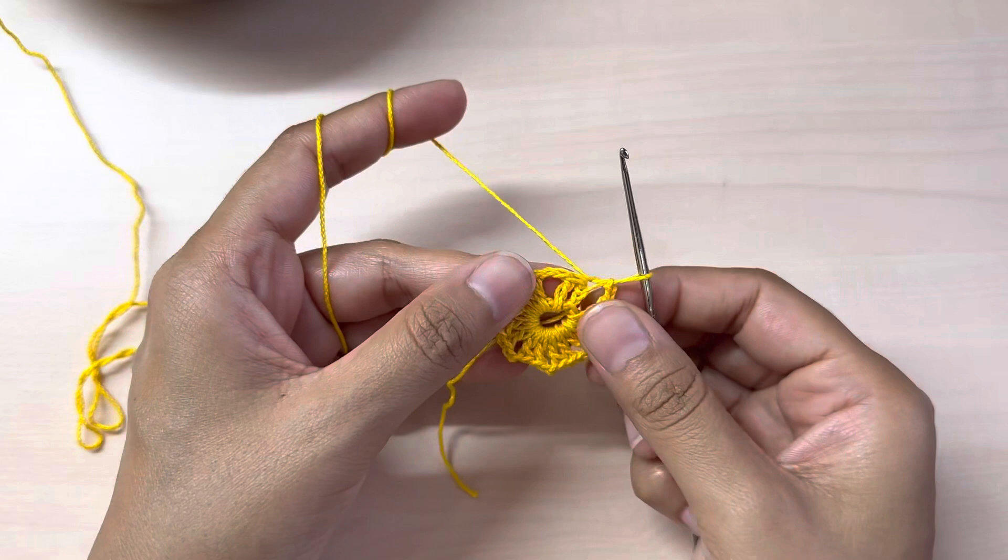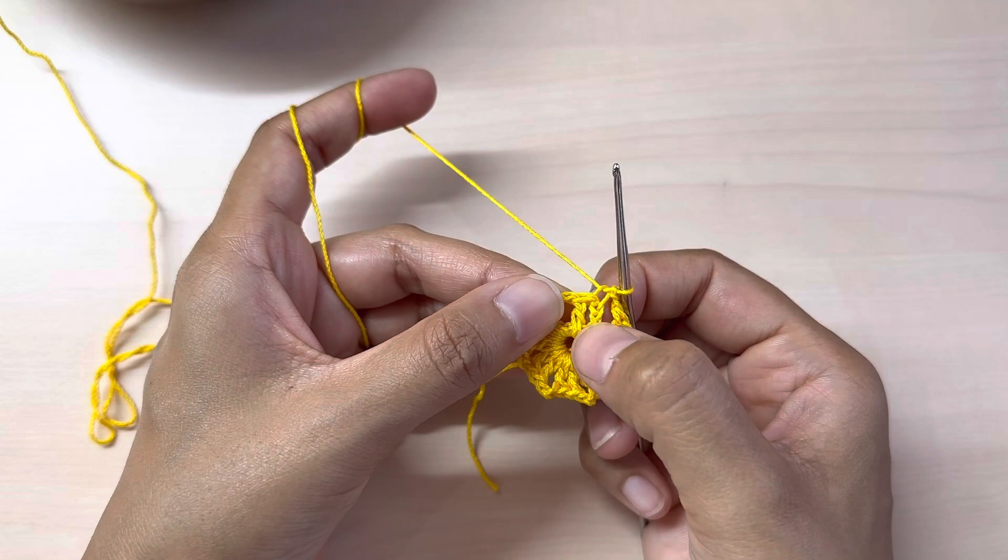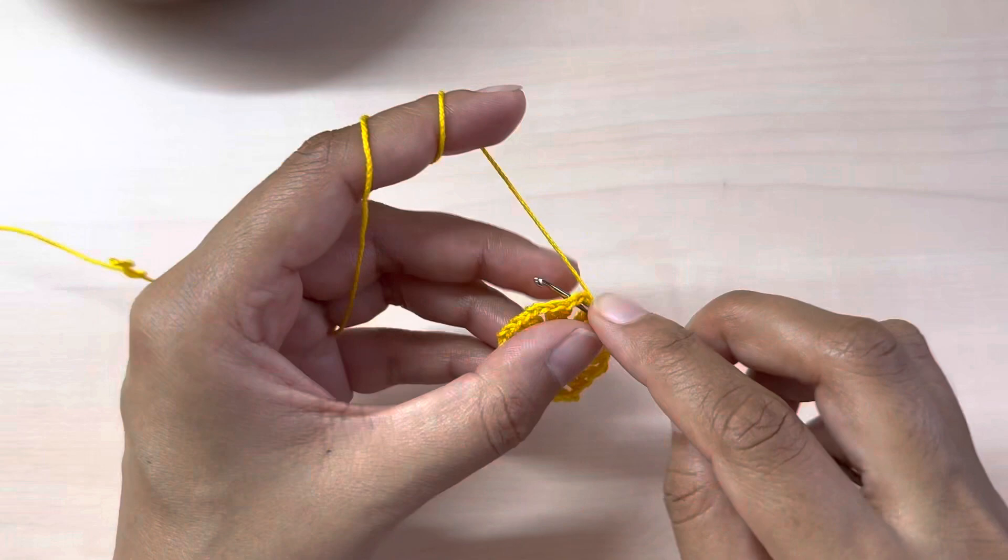Now to start off the second round I'm going to make a slip stitch right into the space between the first three chain and the double crochet. I'm going to make a slip stitch and into this chain two space I will be making six double crochets. One.